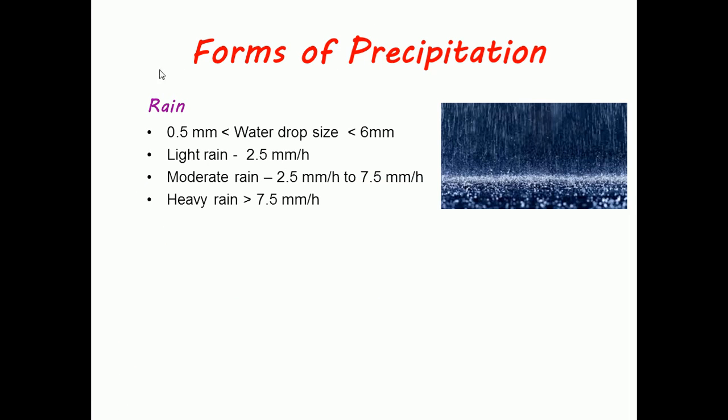Now we shall see forms of precipitation in detail. For rain, the water drop size is less than 6mm and greater than 0.5mm. For light rain, the intensity is 2.5 mm per hour.